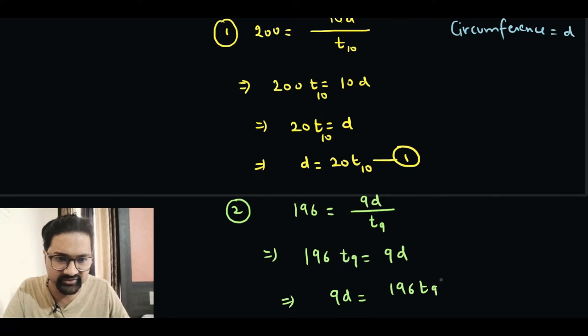From here, if we divide both sides with 9, we have 9D over 196 is equal to T9. T9 is actually the value of D as well.